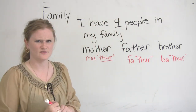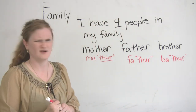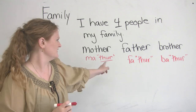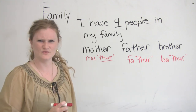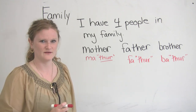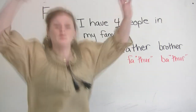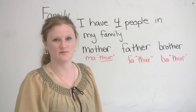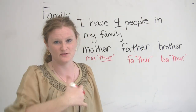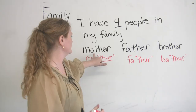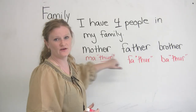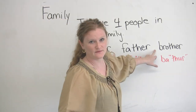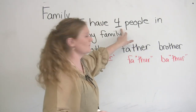So you're thinking to yourself, Ronnie, I know you're bad at math, but I only see three people on the board. Don't forget about me! You must include yourself when you're talking about your family because you're part of it. So, as you can see, I have a mother, a father, and one brother — that equals four.